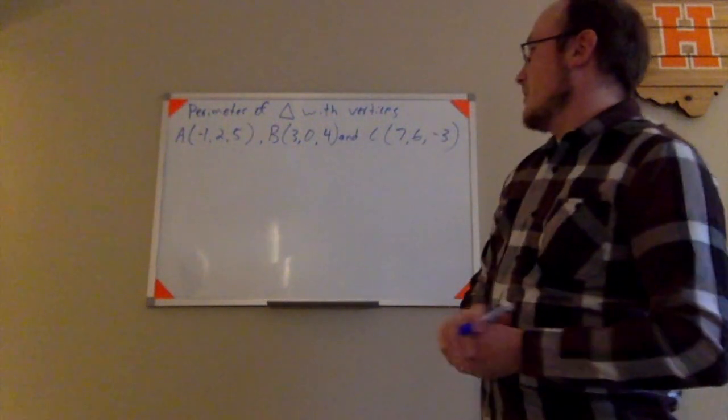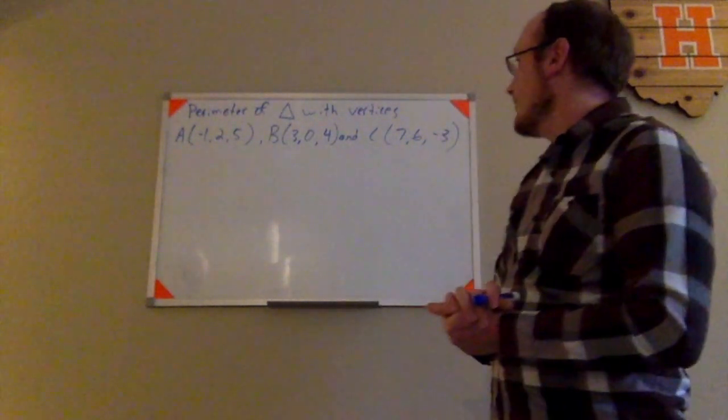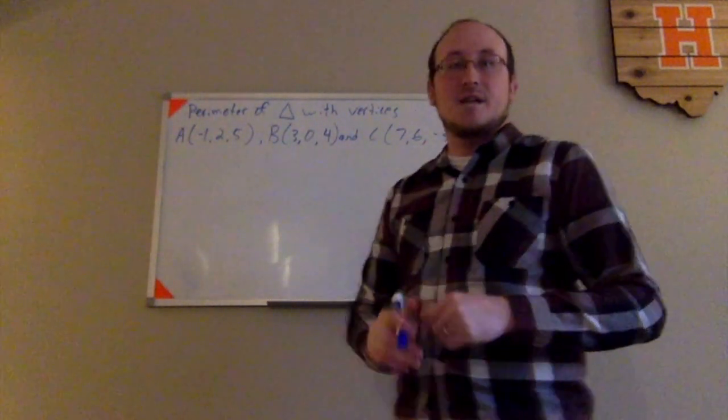So here we have our three points for the vertices of the triangle. Point A is (-1, 2, 5). Point B is (3, 0, 4). And point C is (7, 6, -3).